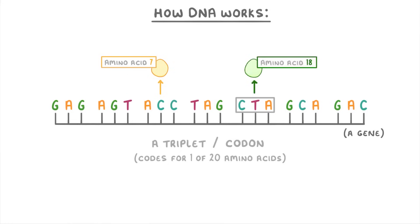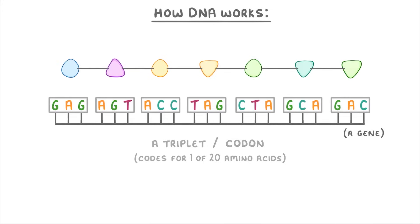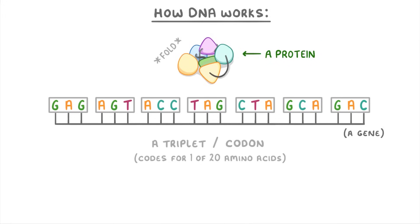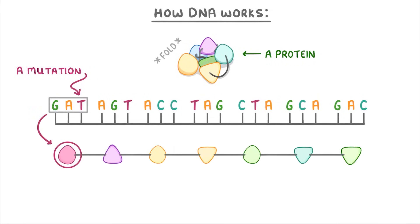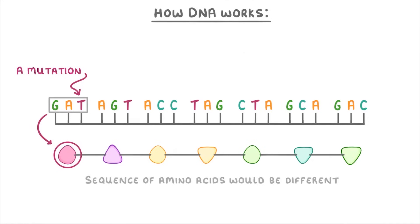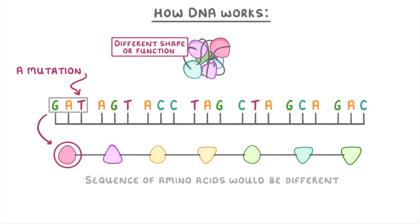By doing this for all of the triplets and combining the amino acids together in the correct order, we create a long chain of amino acids which can then fold up by itself to form a protein. However, if this piece of DNA had a mutation — for example this G changed to a T — then the amino acid that this codon codes for might change as well. This small change can have lots of knock-on effects, because the overall sequence of amino acids would now be different, and so the protein that it ends up forming would be different as well, meaning it can have a different shape or function.